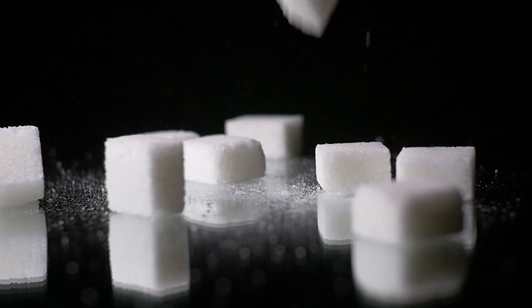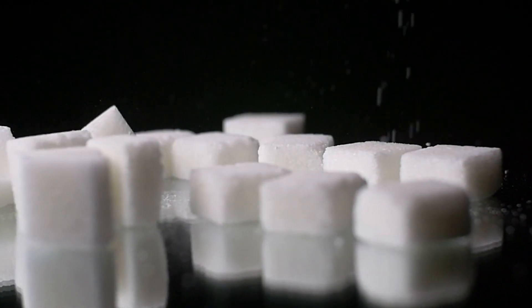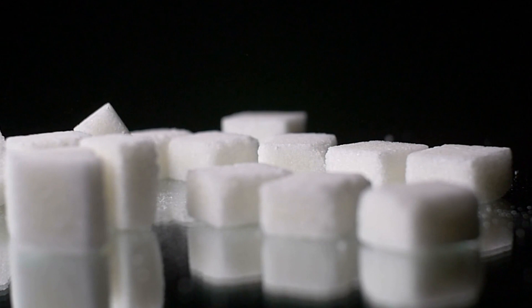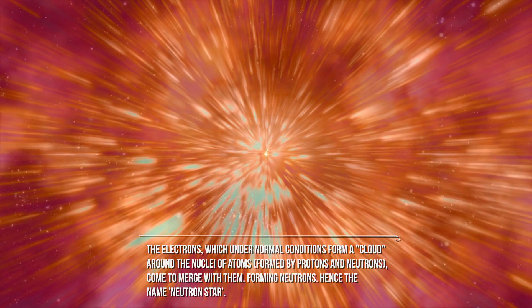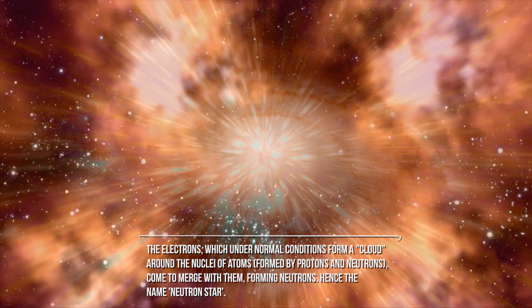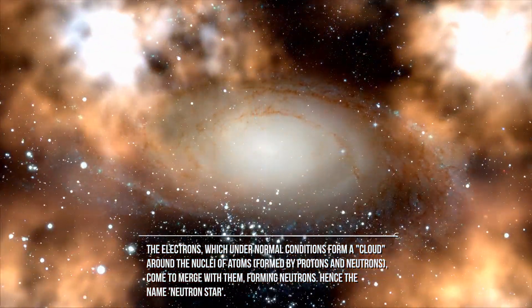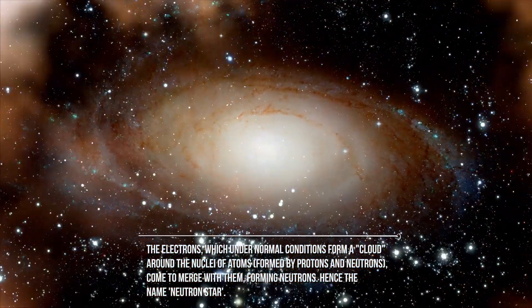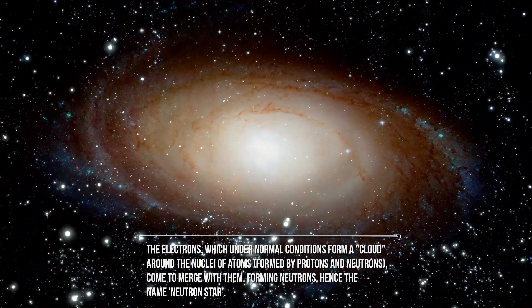At these densities, the pressure inside the star is such that the matter collapses even at the atomic level. The electrons, which under normal conditions form a cloud around the nuclei of atoms formed by protons and neutrons, come to merge with them forming neutrons, hence the name neutron star.